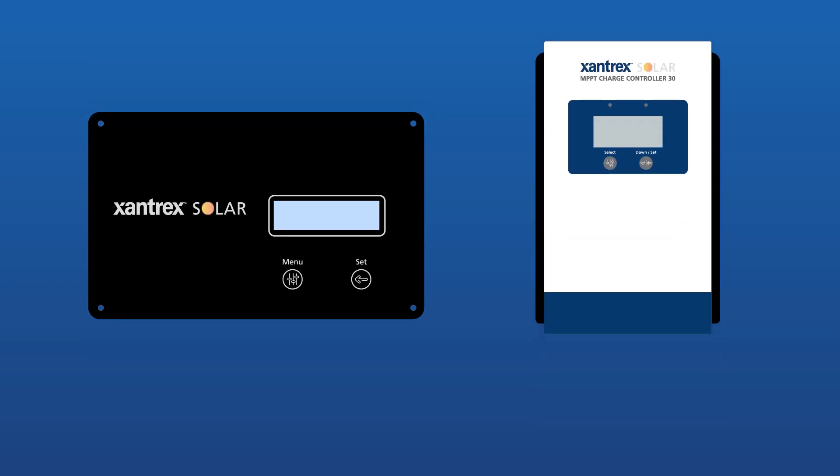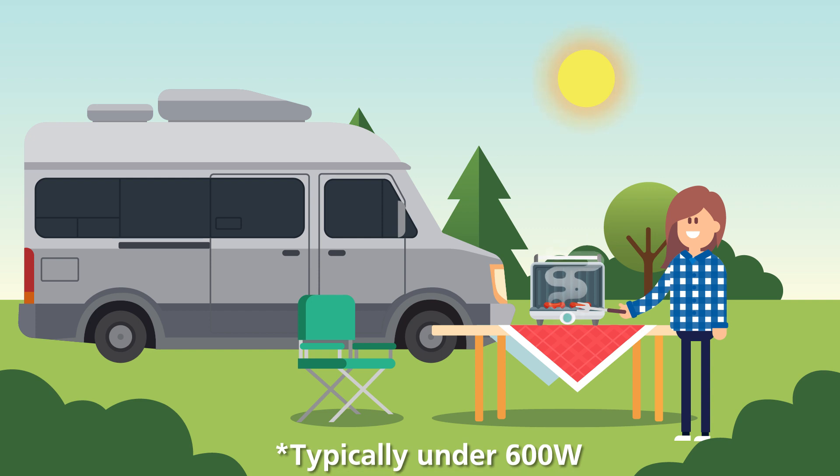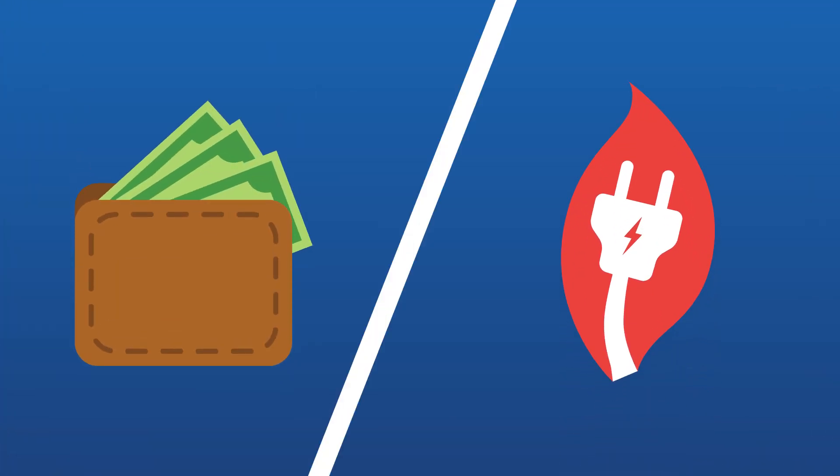There are two types of charge controllers: Pulse Width Modulation, or PWM, and Maximum Power Point Tracking, or MPPT. A PWM charge controller is suitable for small-to-medium solar systems where solar is used strictly as a battery maintainer. While cost-effective, it is not very energy efficient.